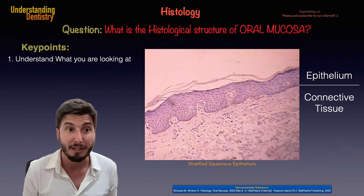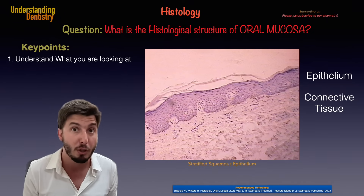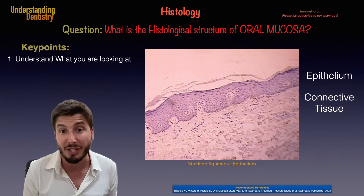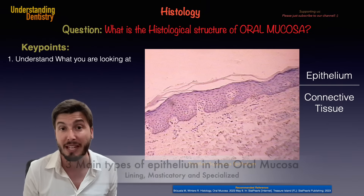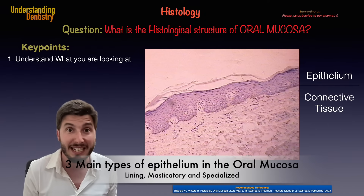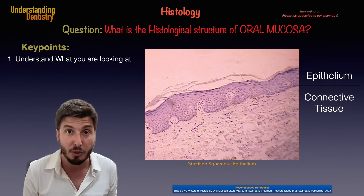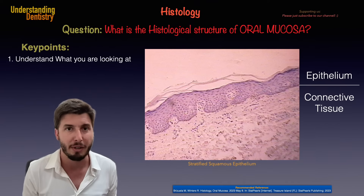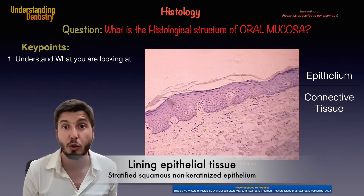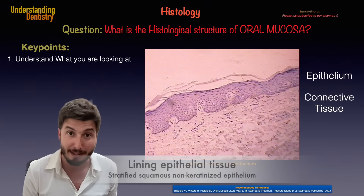The first key point is we should understand what you are looking at, because we have three main types of epithelial tissue. We have the lining epithelial tissue, which is the one of the cheeks or the floor of the mouth, and this one is non-keratinized.